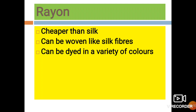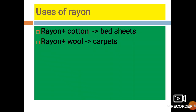Rayon is cheaper than silk and can be woven like silk fibers. It can also be dyed in a variety of colors. Uses of rayon include mixing it with cotton to make bedsheets, and mixing it with wool to make carpets.